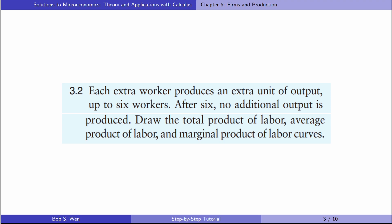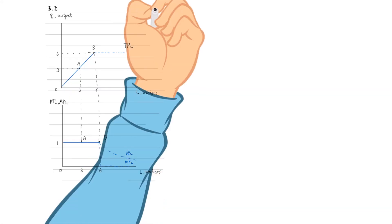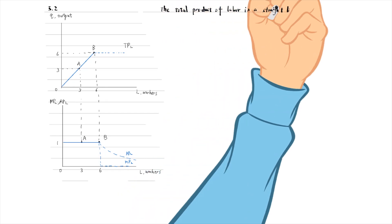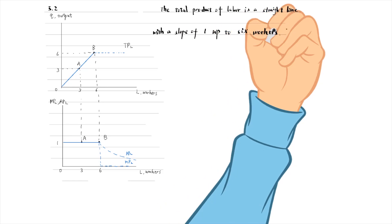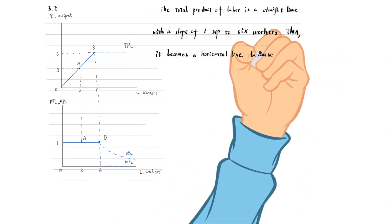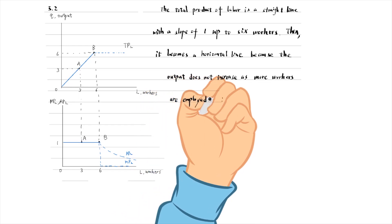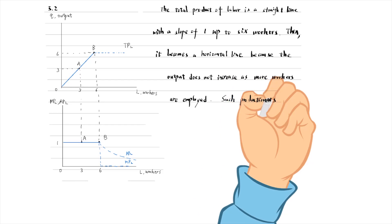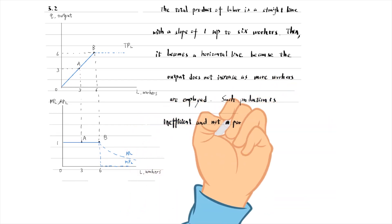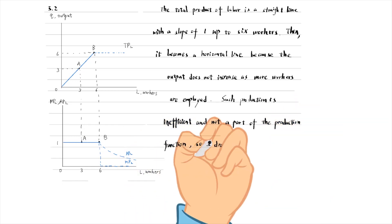Let's do exercise 3.2. Each extra worker produces an extra unit of output up to 6 workers. After 6, no additional output is produced. Draw the total product of labor, the average product of labor, and the marginal product of labor curves. The total product of labor is a straight line with a slope of 1 up to 6 workers, then it becomes a horizontal line because output does not increase as more workers are employed. However, such production is inefficient and not part of the production function, so I draw it with a dashed line.